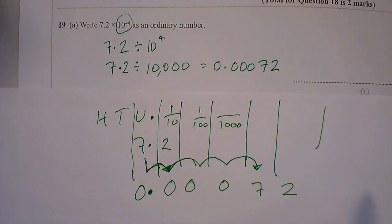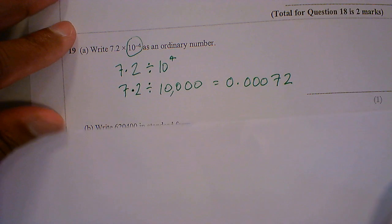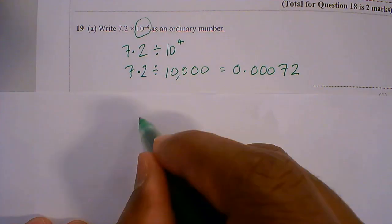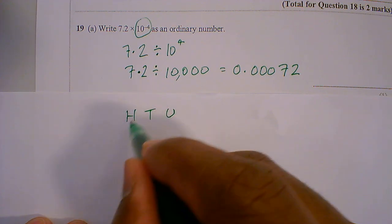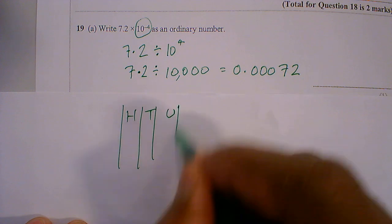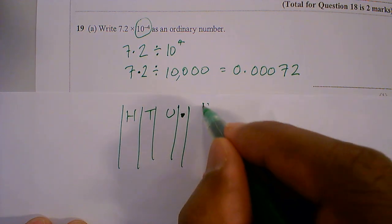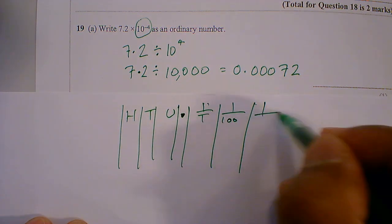There's a third method which you can do, if I just flip the paper over. Again, it's sticking to place values. Units, tens, hundreds. We've got our decimal point. And then we've got a tenth, a hundredth, a thousandth.